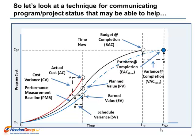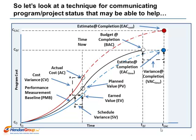The variance at completion for time is simply the difference in time between the budget at completion duration and the estimate at completion duration. Just as we did with determining estimate at completion for time, we can calculate estimate at completion for cost. Graphically, the way to think about estimate at completion for cost is the estimated cost where earned value equals planned value.